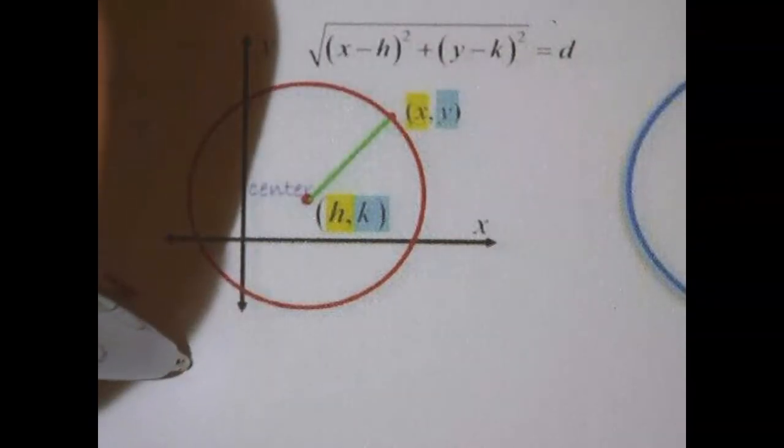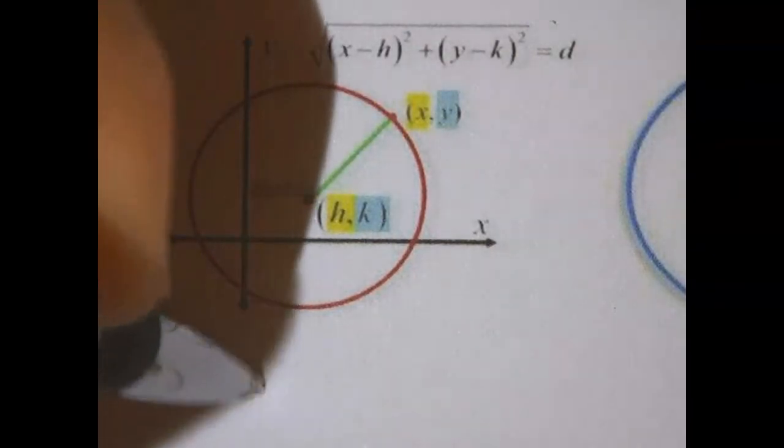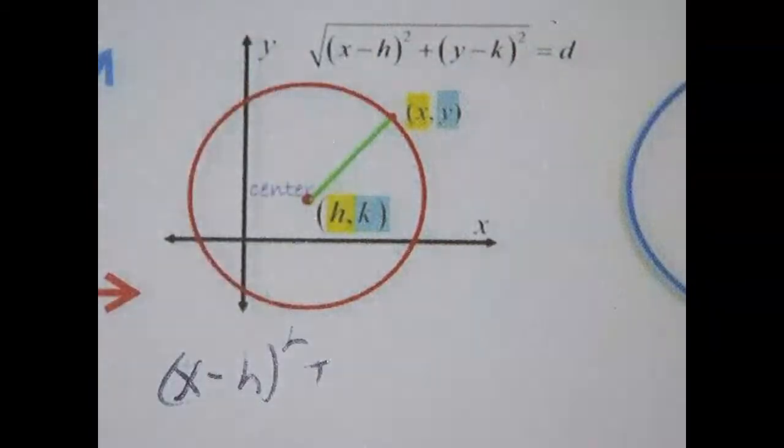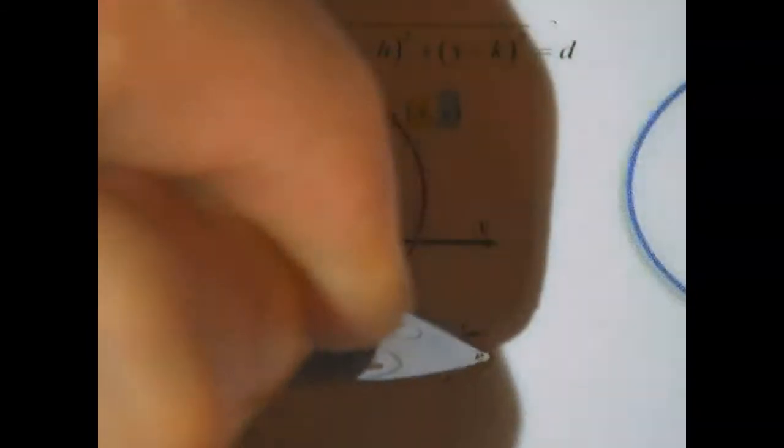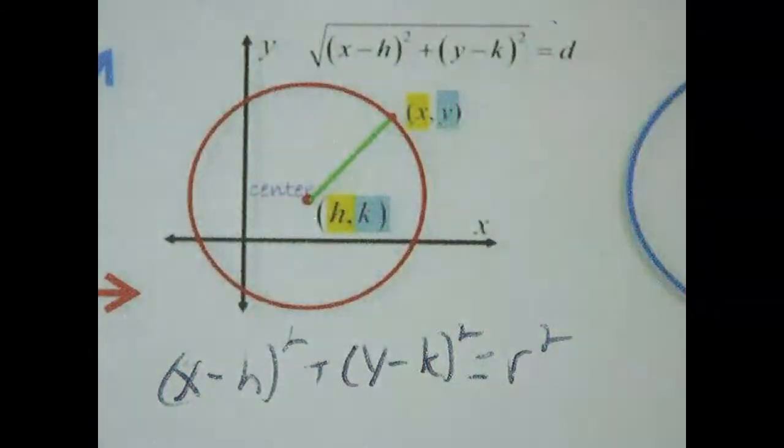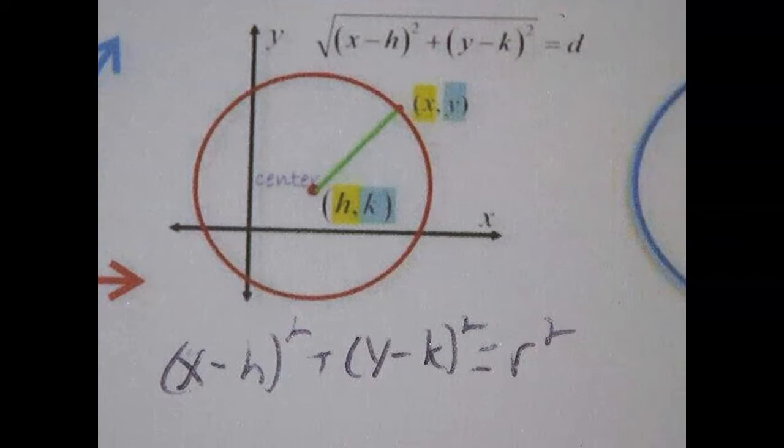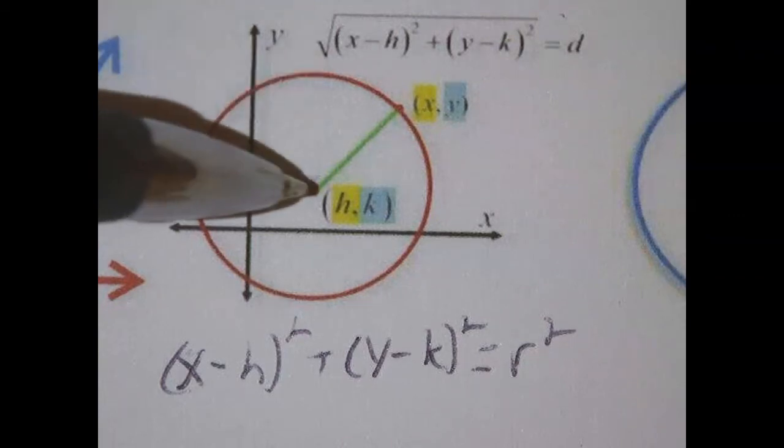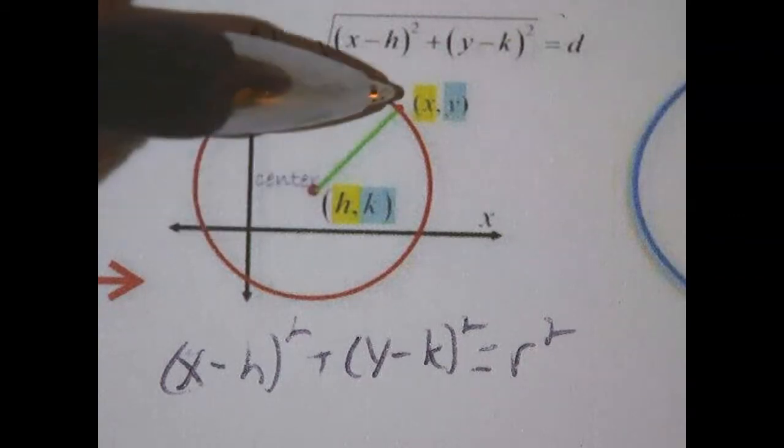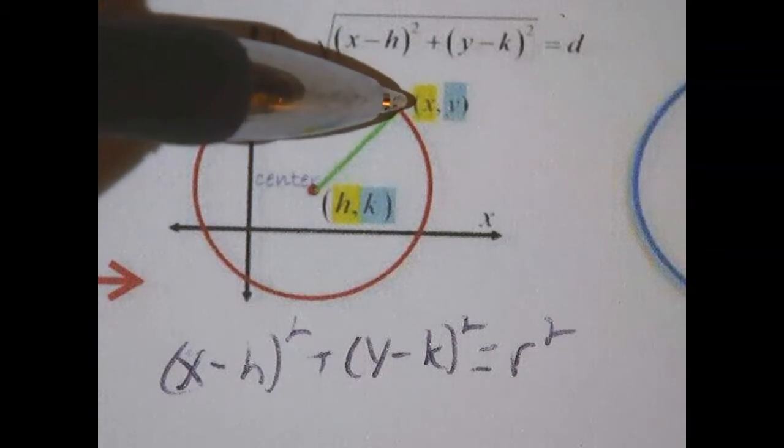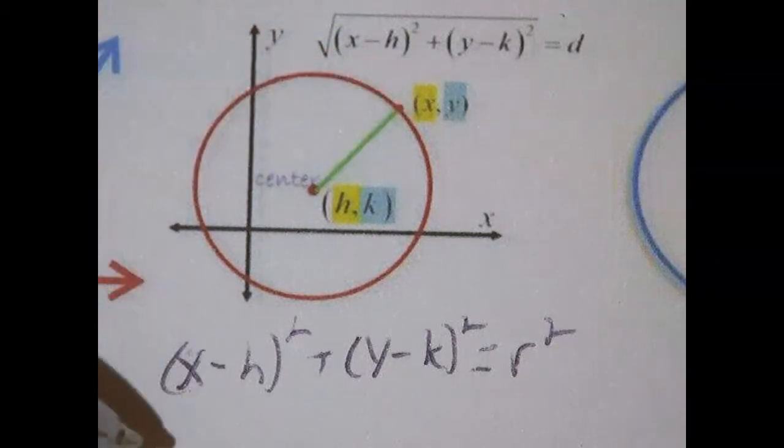then we would have x minus h squared plus y minus k squared equals r squared. And that's our equation for a circle, that's the general equation for a circle. And this is how we get the center hk and we just pick a general point on the circle. So the equation for a circle is really just the distance formula and not much more to it than that.